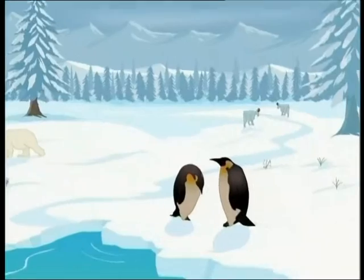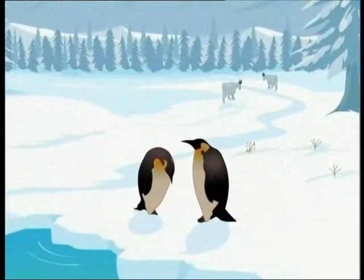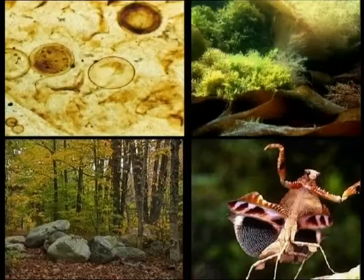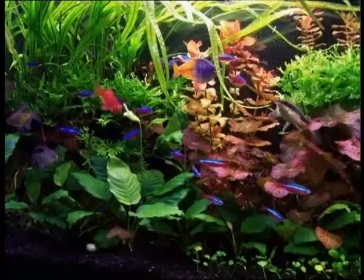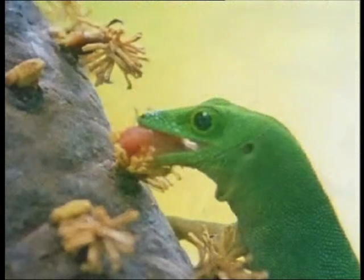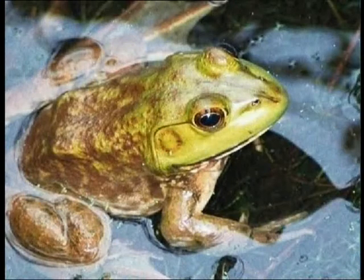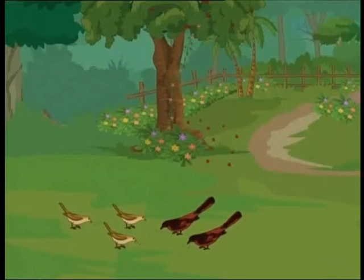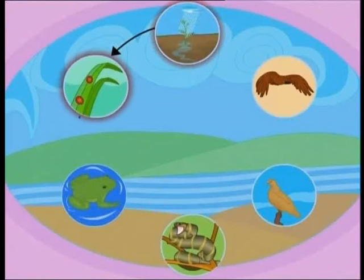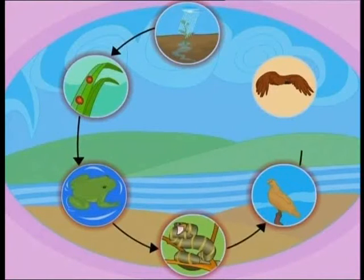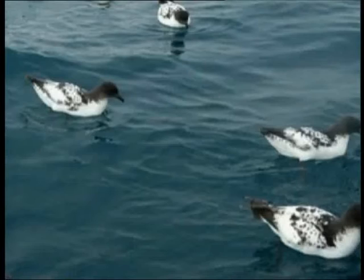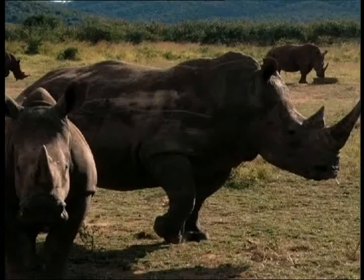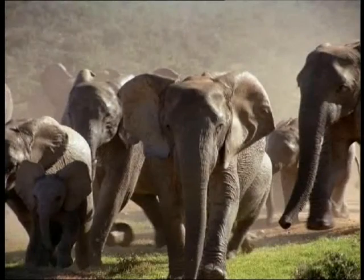The climate and geography of a region determines what type of biome can exist in that region. The Earth includes a huge variety of living things, from complex plants and animals to very simple one-celled organisms. But large or small, simple or complex, no organism lives alone. Each depends in some way or another on various other living and non-living things in its surroundings for its survival. So it is interesting to know that the biome concept embraces the idea of community.